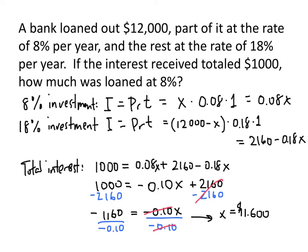We know our units are dollars, because x was how much of our initial investment we put into the 8% investment. So we put $11,600 into the 8% investment. They didn't ask this, but we can figure out that only $400 went into the 18% investment.